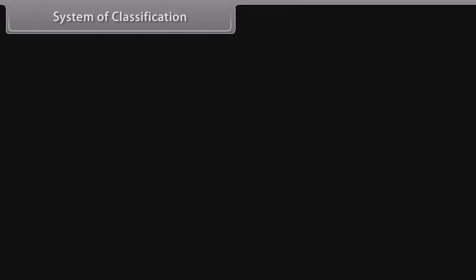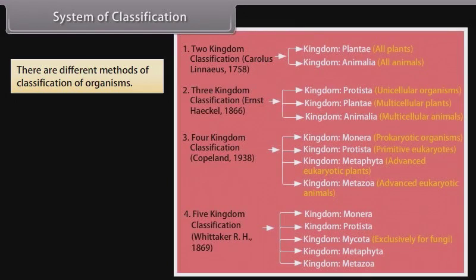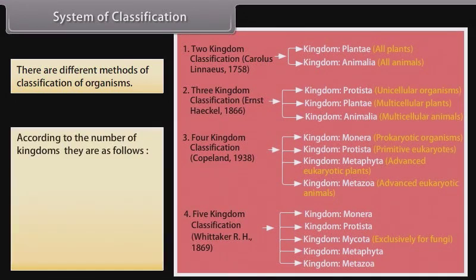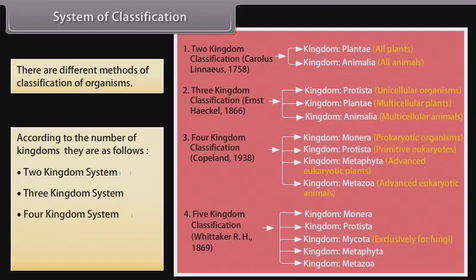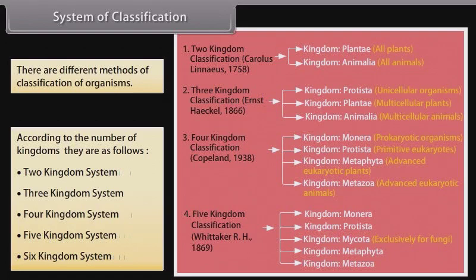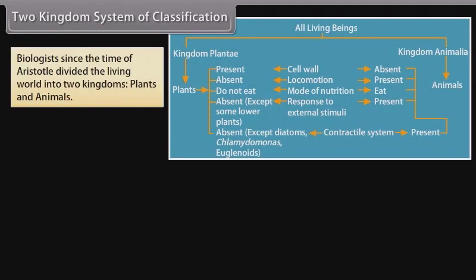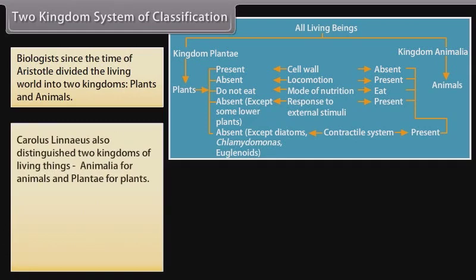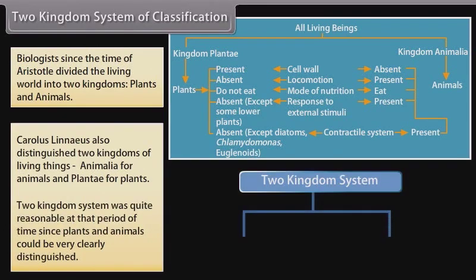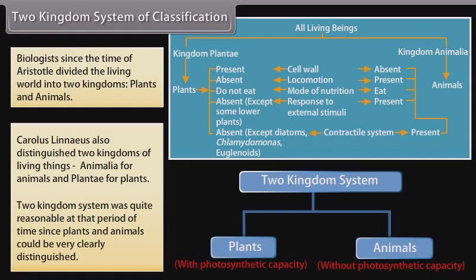There are different methods of classification of organisms. According to the number of kingdoms, they are: Two Kingdom System, Three Kingdom System, Four Kingdom System, Five Kingdom System, and Six Kingdom System. Biologists since the time of Aristotle divided the living world into two kingdoms — plants and animals. Carolus Linnaeus also distinguished two kingdoms: Animalia for animals and Plantae for plants. The Two Kingdom System was quite reasonable at that time since plants and animals could be very clearly distinguished.